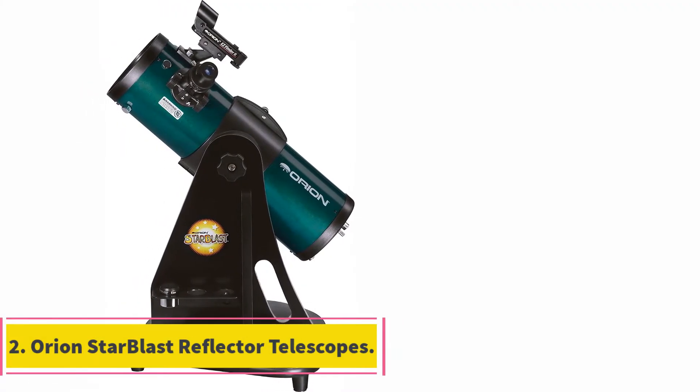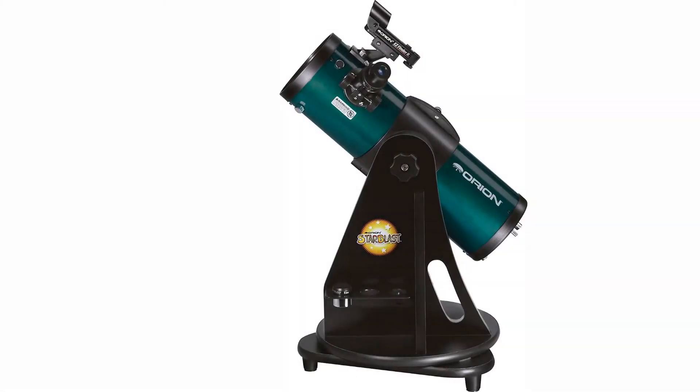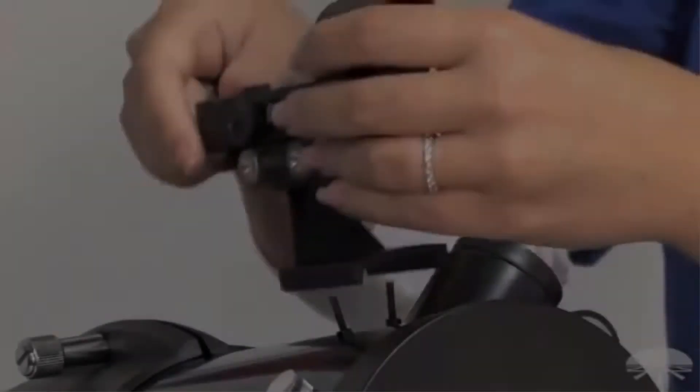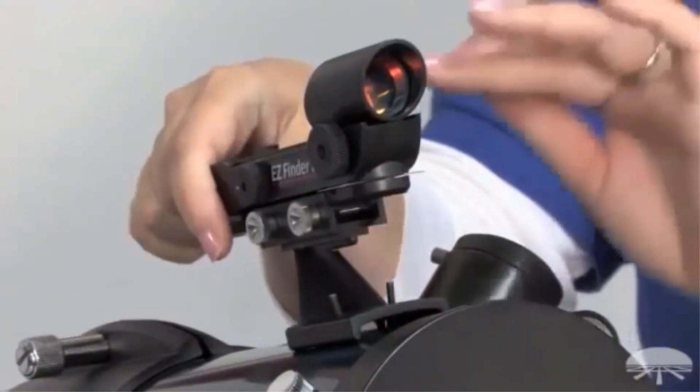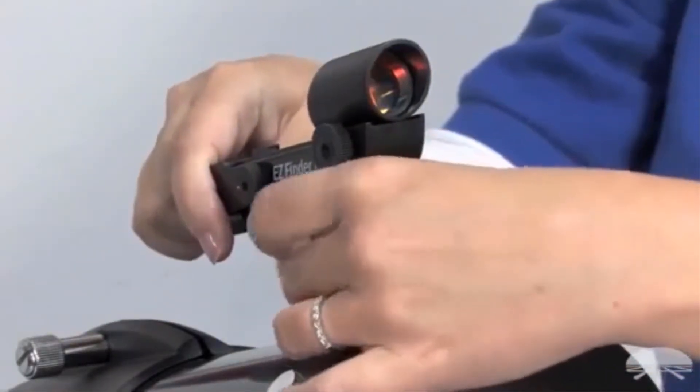At number 2, Orion Star Blast Reflector Telescopes. This pre-assembled telescope is advertised as a grab-and-go unit because everything about the design concept is engineered to be as low maintenance as possible. In addition to shipping pre-assembled, it is also compact enough to be stored on a tabletop or desk with ease.